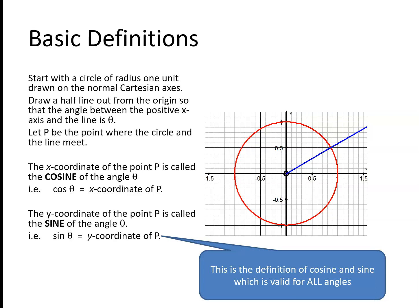Recall the definition of cosine and sine: if we have a circle with centre the origin and radius 1, and draw a line out making an angle θ with the x-axis, then the point P where the line meets the circle has x-coordinate defined as cos θ and y-coordinate defined as sin θ.